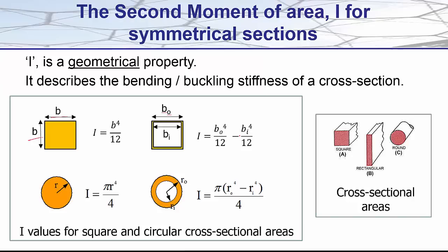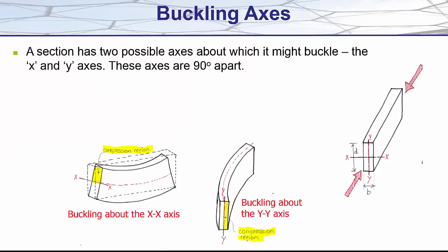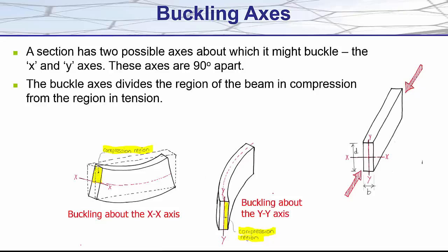For a circular section I is equal to pi times the radius to the power of 4 divided by 4, and when a circle is hollow once again it's equal to the outer I value take away the inner I value. Now a section has two possible axes about which it might buckle, the x and y-axis, and these axes are 90 degrees apart. The buckle axis divides the region of the beam in compression from the region in tension.